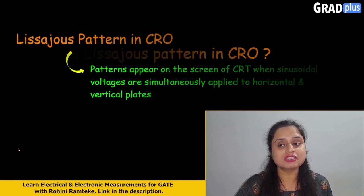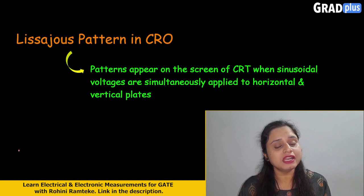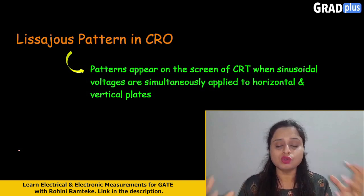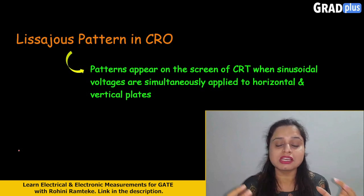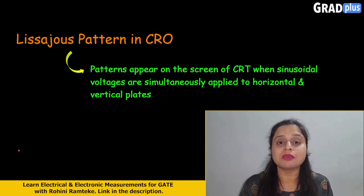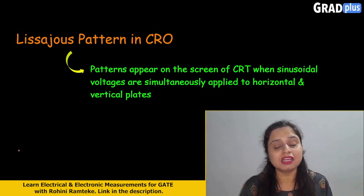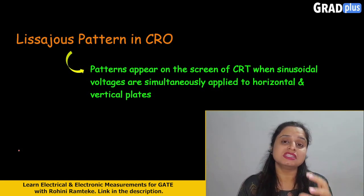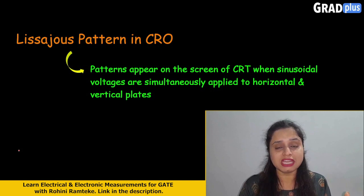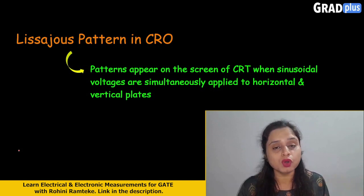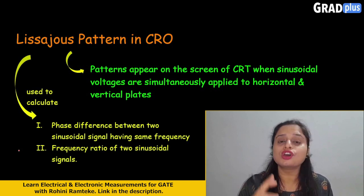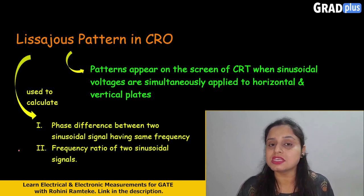But what is happening in the Lissajous pattern? In the Lissajous pattern, on both the horizontal and vertical plates, we are giving sinusoidal waveforms. Due to those two sinusoidal waveforms given on the horizontal and vertical plates, whatever pattern develops on the CRT screen is called the Lissajous pattern.